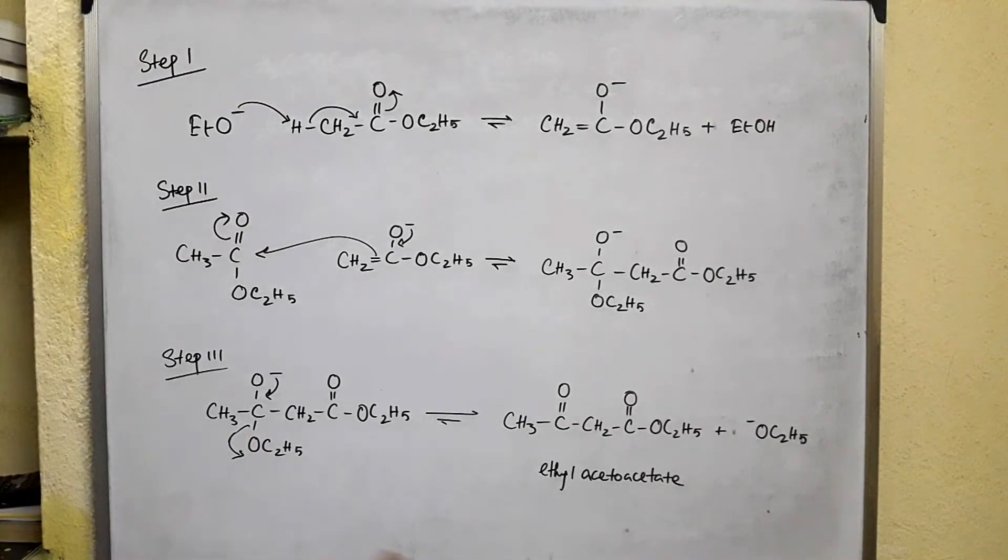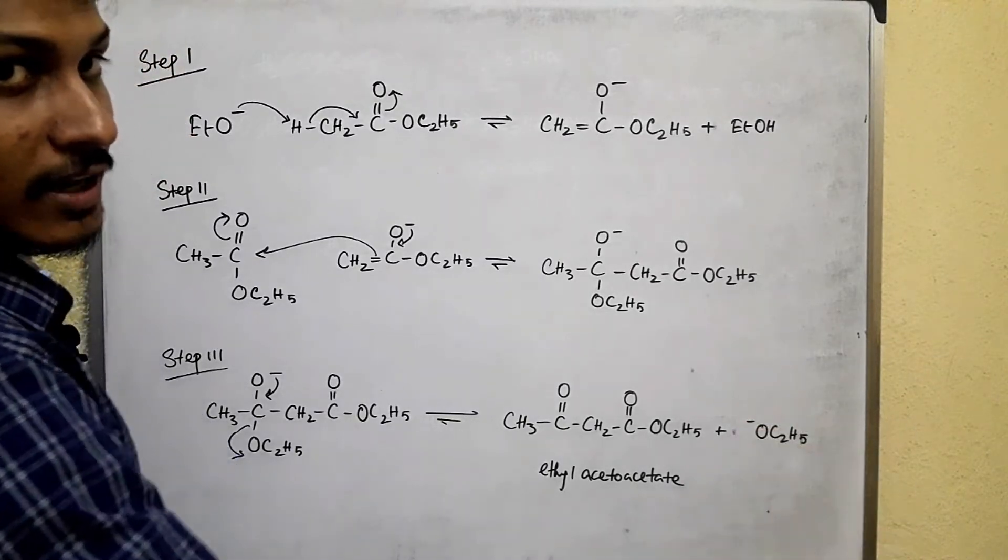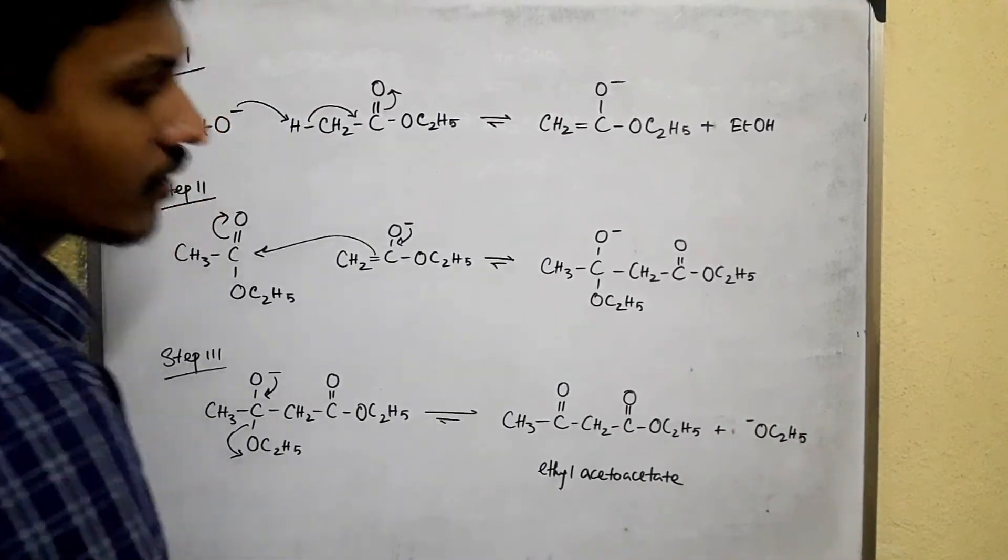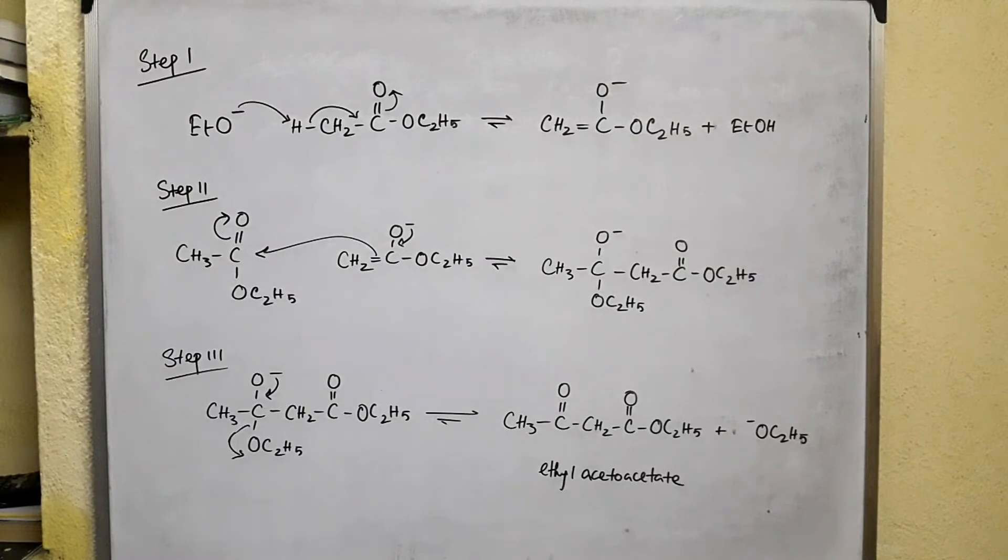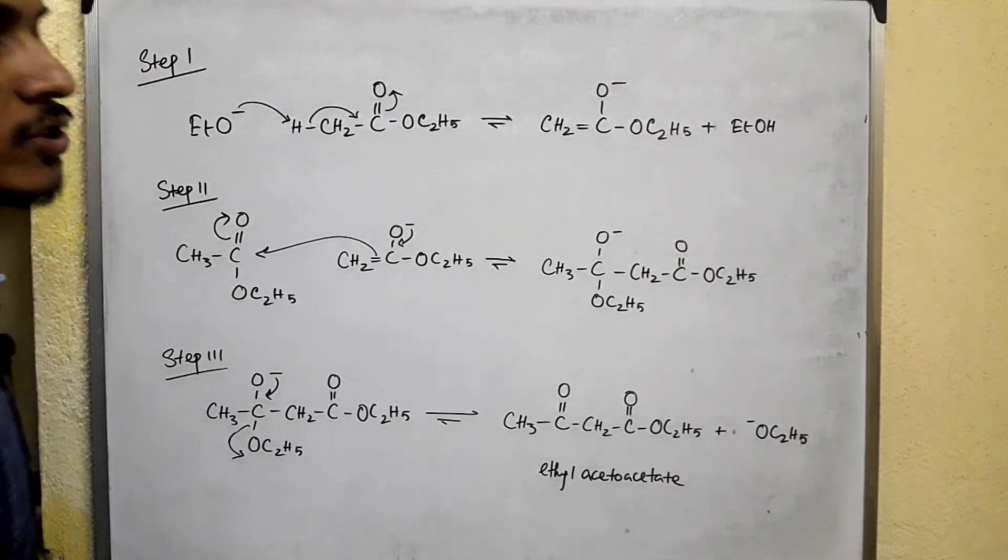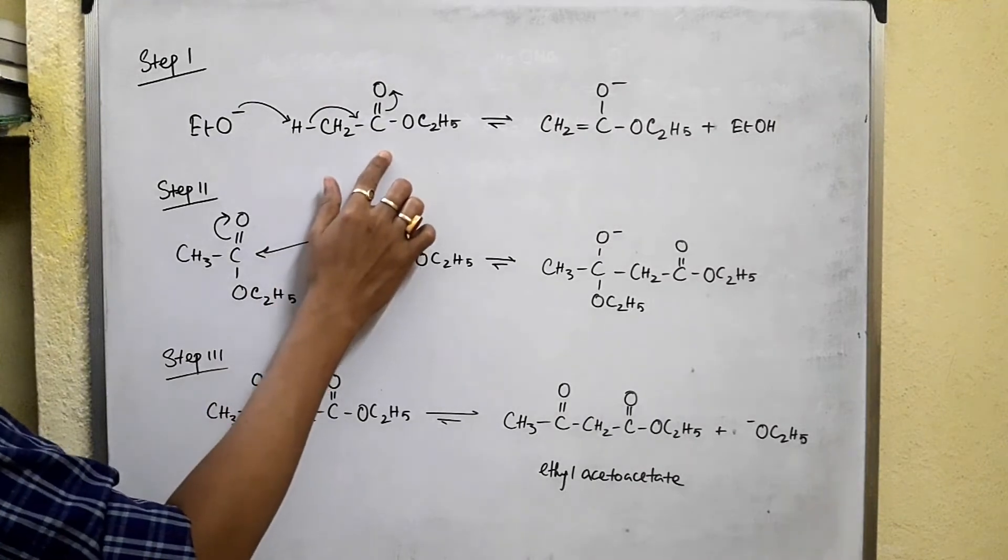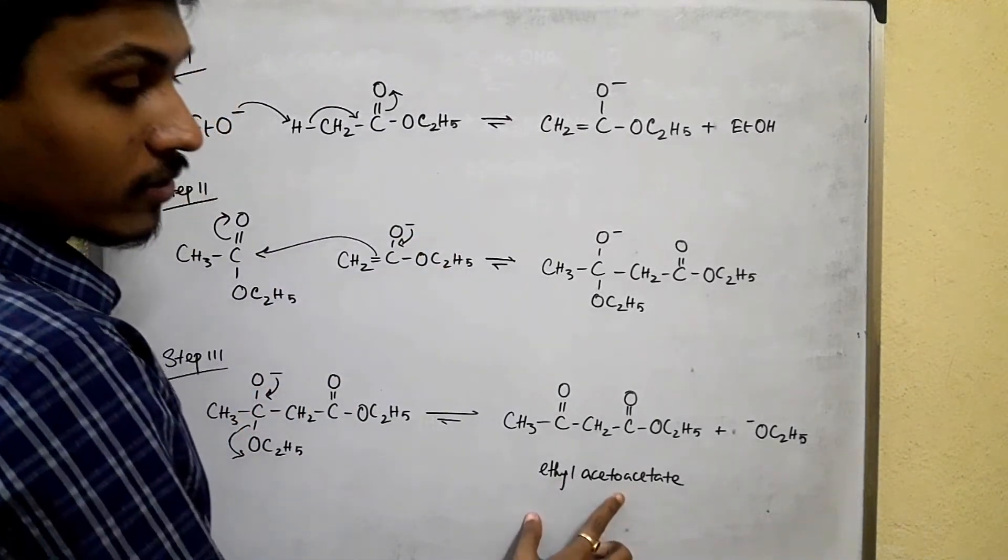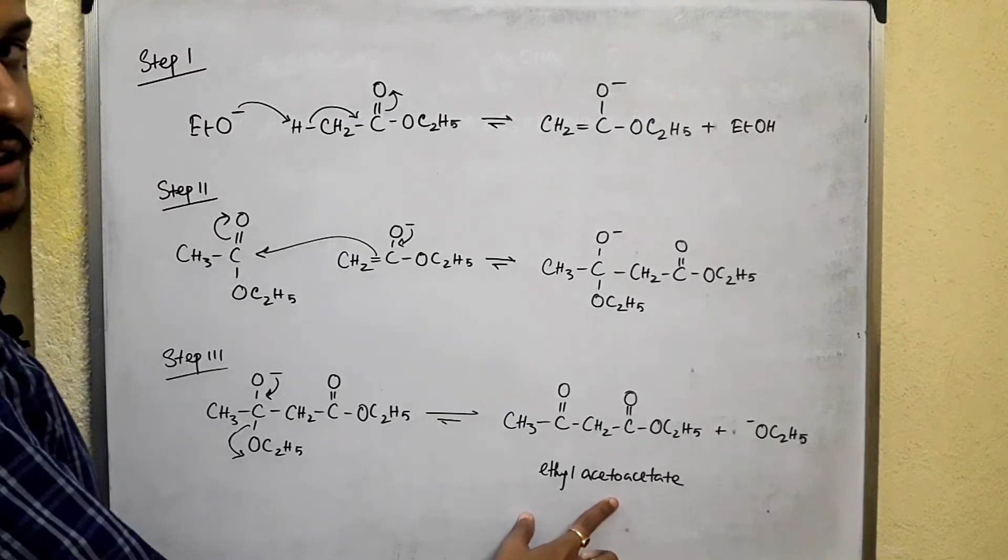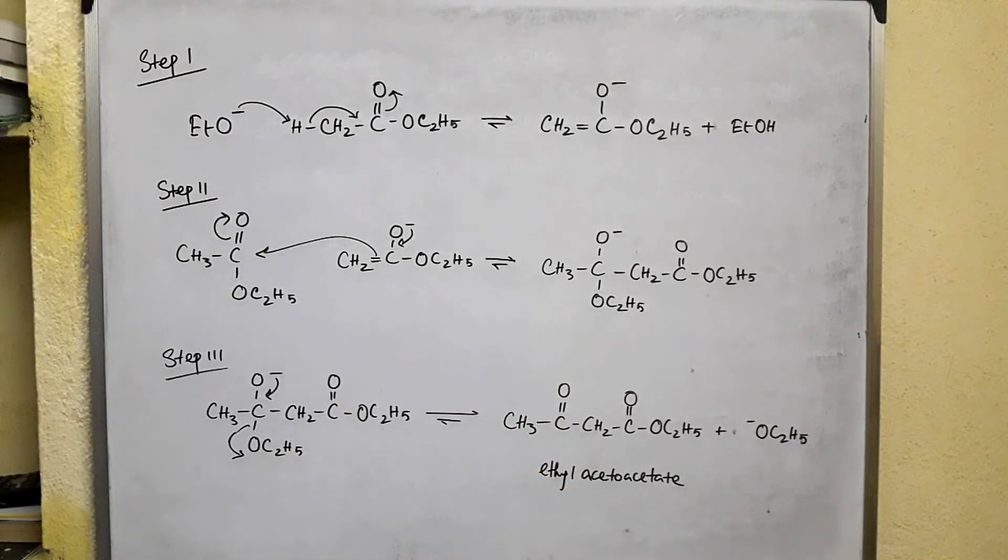It looks like we get our catalyst back like the aldol condensation. This ethoxide is too weak to remove the proton from ethyl acetate, but it is strong enough to remove the proton from ethyl acetoacetate.